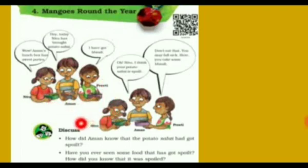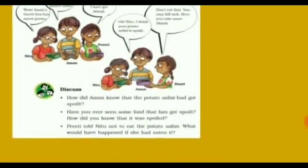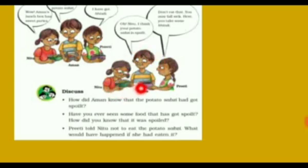In the second picture, you can see the face expressions of all the children have changed. Aman says, 'Oh Neetu, I think your potato sabzi has spoiled.' Preeti says, 'Don't eat that. You may fall sick. Here, take some bhindi.' The question is, how did Aman know that the potato sabzi had got spoiled? Notice the expressions on Aman's face — even without eating, he has found that the food has got spoiled.